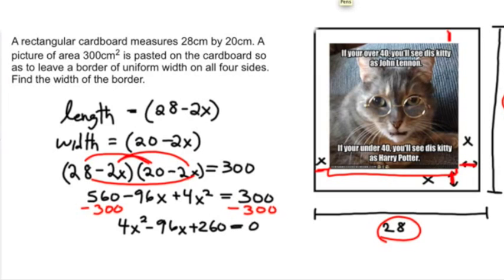We might be tempted to plug this into the quadratic formula. You can. We might be tempted to plug this into the cross method. You really shouldn't, but you can. What we can see though is that all of these values, 4, 96, and 260 are divisible by 4. So I'm going to divide everything by 4, even 0. We're dividing everything by 4. So now I get x² minus 24x plus 65 equals 0.